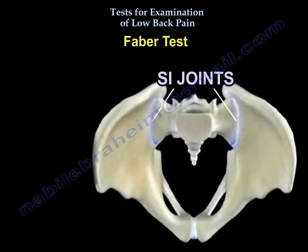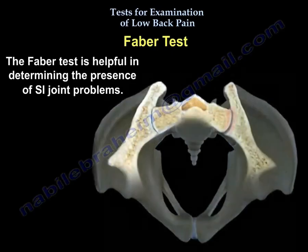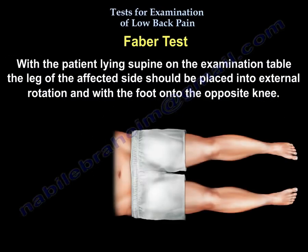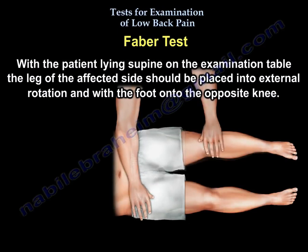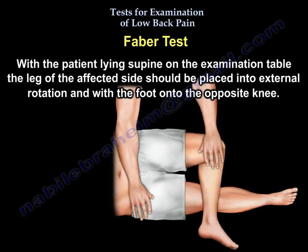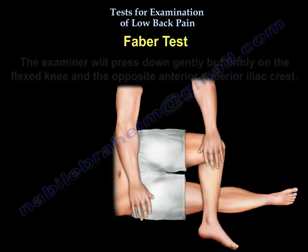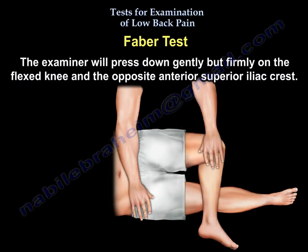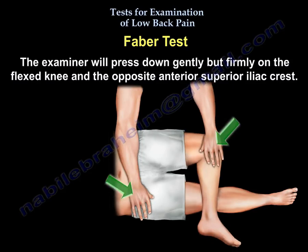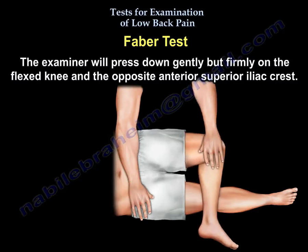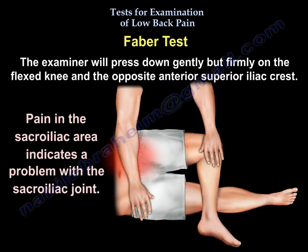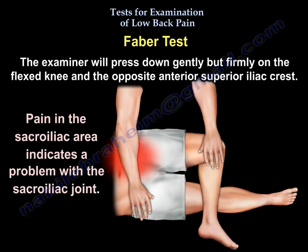The Faber test helps in diagnosing sacroiliac joint problems. The patient lies supine on the examination table and the leg of the affected side is placed into external rotation with the foot going toward the opposite knee. The examiner presses gently but firmly on the flexed knee and the opposite anterior superior iliac crest. Pain in the sacroiliac area indicates a problem with the sacroiliac joint.